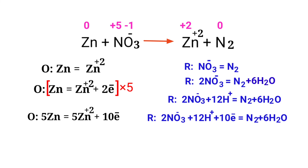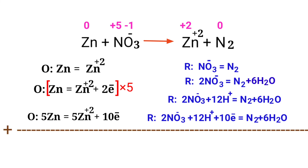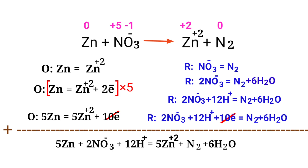Now add both half reactions together and cancel the same terms on each side. The equation is now fully balanced in an acidic medium.